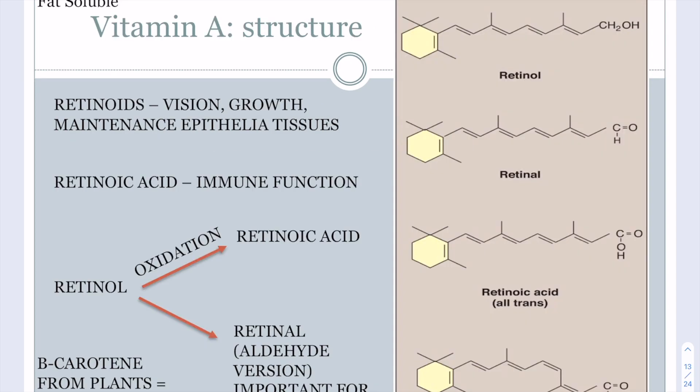Now moving into our fat-soluble vitamins, starting with vitamin A. Vitamin A is famously known for vision, but also has a role in general growth, maintenance of epithelial layers — such as retinol treatments for skin diseases — and immune function, which requires retinoic acid. Retinol can take two pathways: oxidation to form retinoic acid, or conversion to retinal, the aldehyde version, which is important for vision.